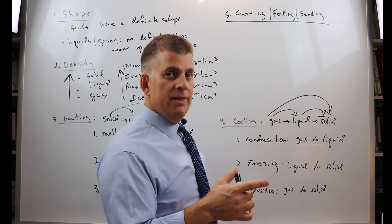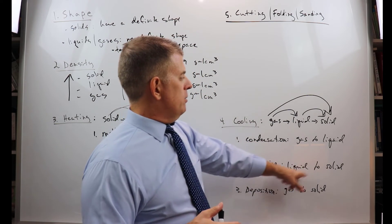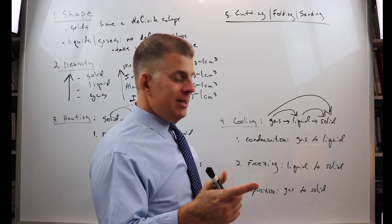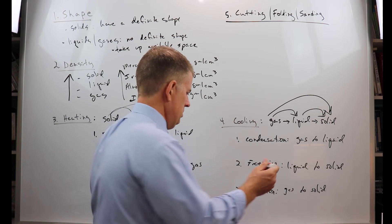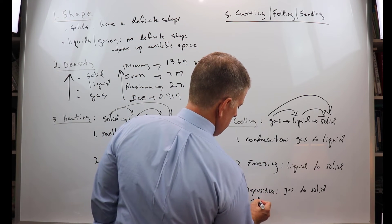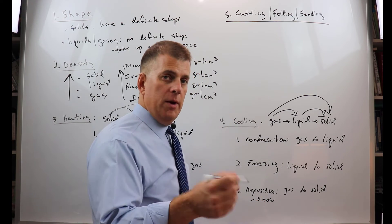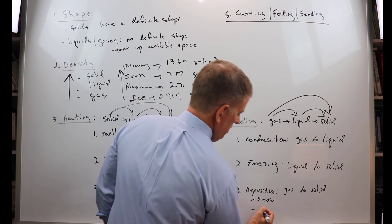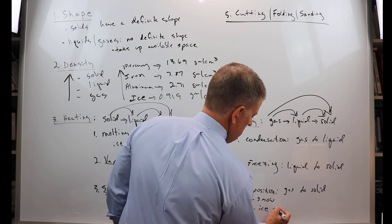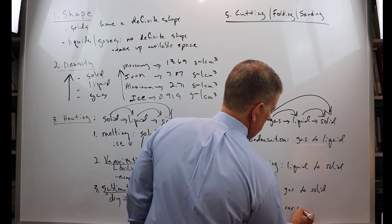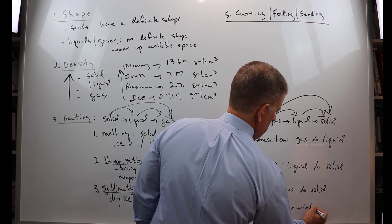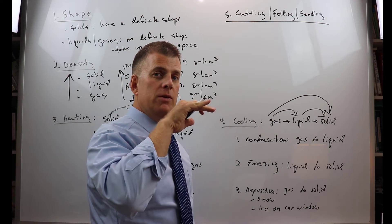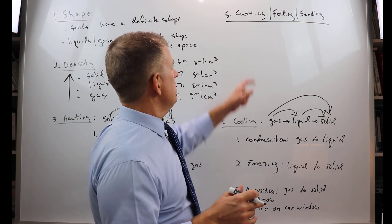The next one, freezing: liquid to solid. That's pretty common - there's really nothing to explain. And the last one, deposition, two examples: snow, when water vapor in the air freezes and falls as snow, and ice on car window, when water vapor in the air freezes and turns to ice on a car window.